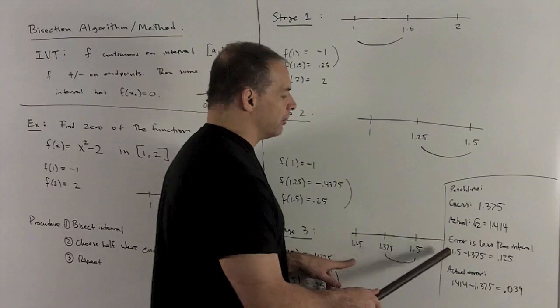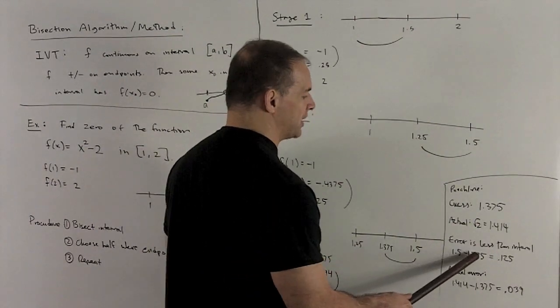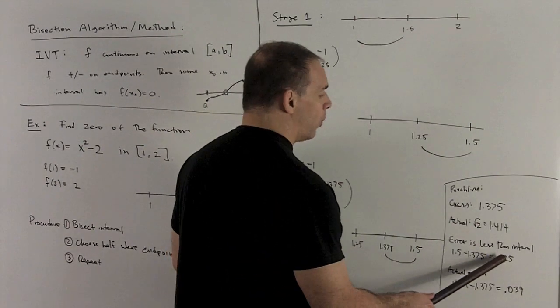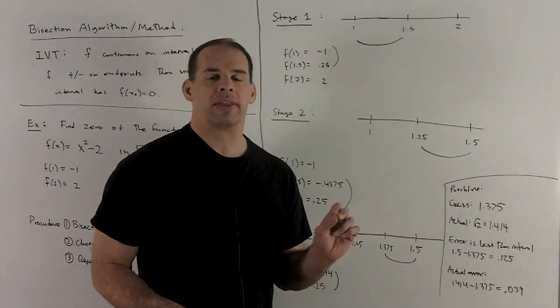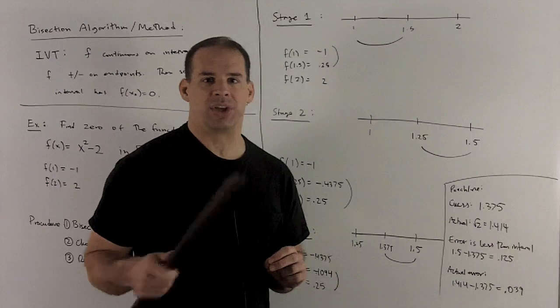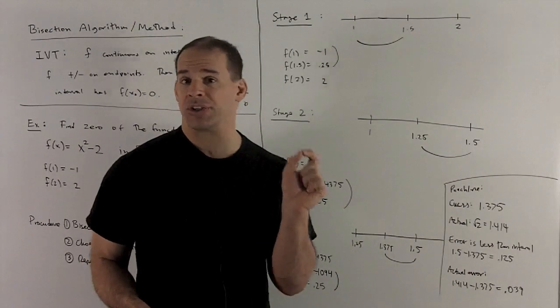Okay, so the bound on our error is going to be 1.5 - 1.375, which is 0.125. So if your tolerance was much smaller than that, then you got to keep bisecting until you get your interval less than your tolerance.